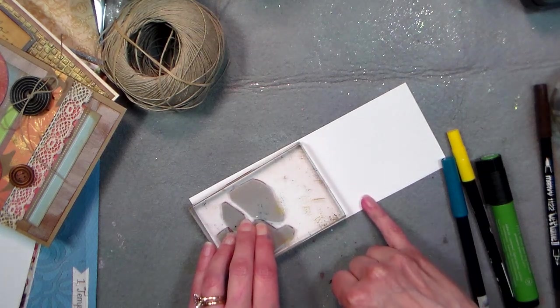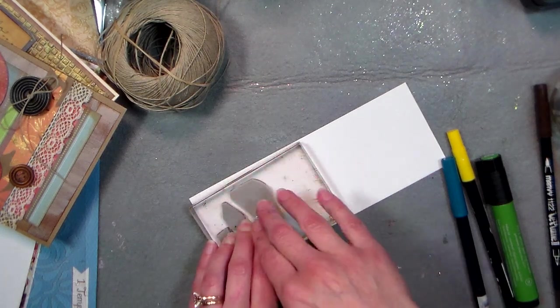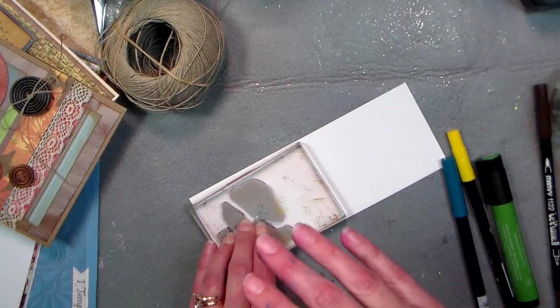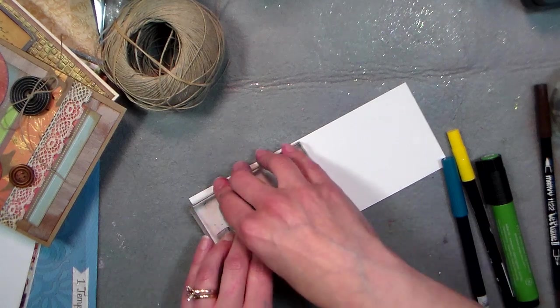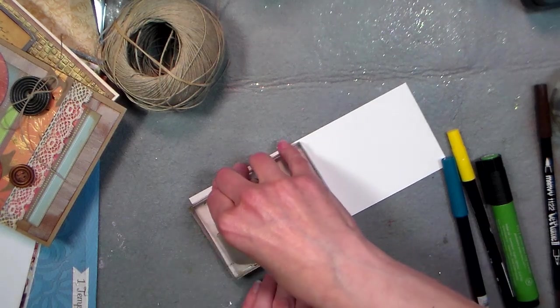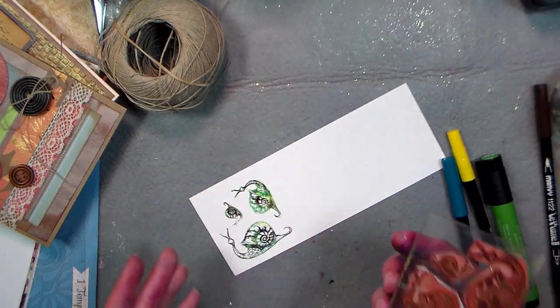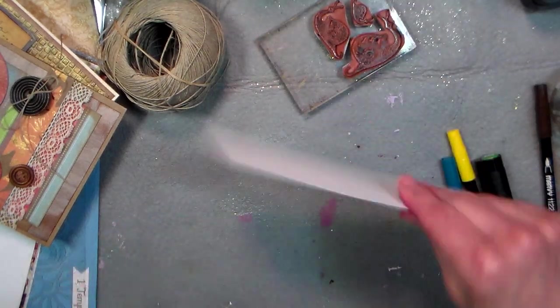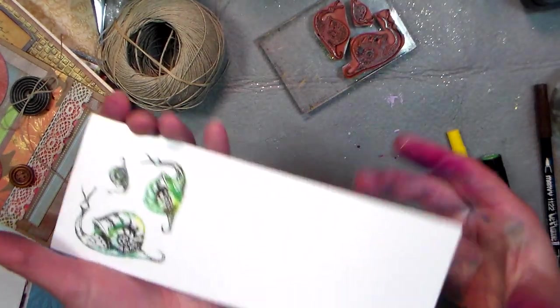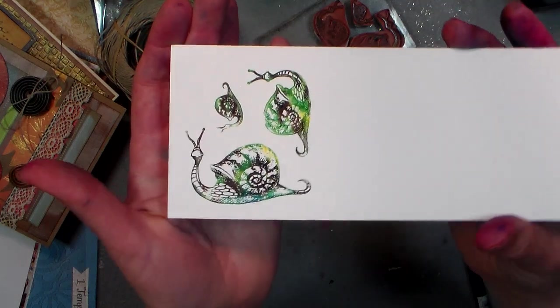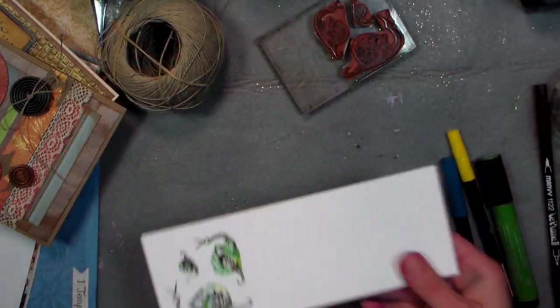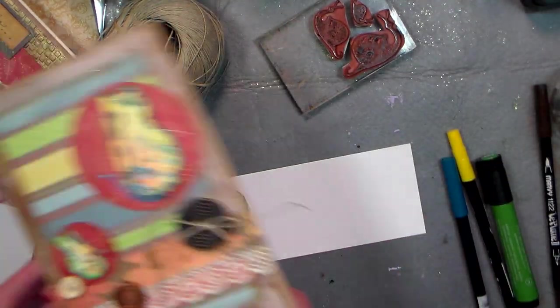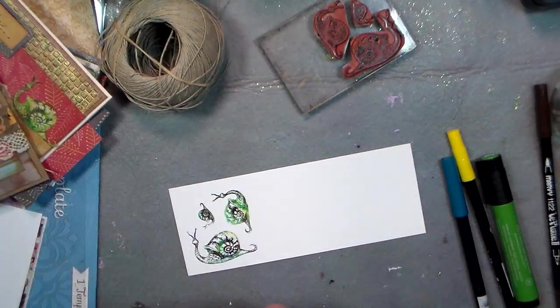And then just press it to your paper and give it a second for the ink to transfer. Now if you're working on photo paper, glossy photo paper, instead of glossy cardstock, you can't press it down this long or it will stick. It'll kind of glue itself to your stamp and it will be a pain in the butt to clean off. So as long as you're using glossy cardstock you're fine. If you're gonna try this with glossy photo paper, then just make sure you don't hold it to the paper so long. So there's that, that looks kind of cool.